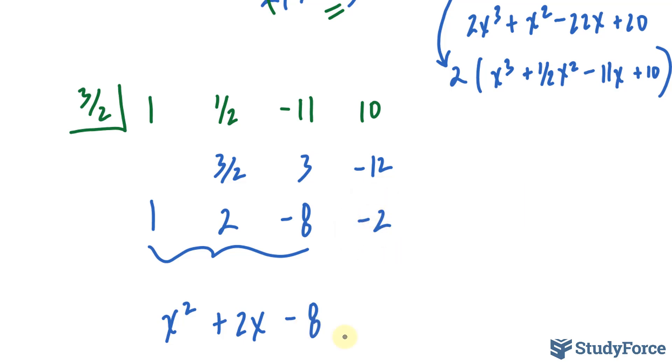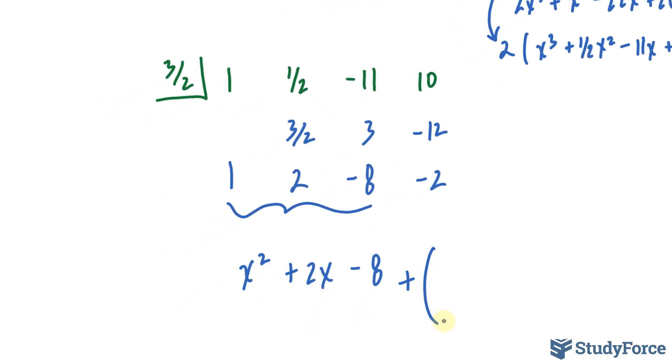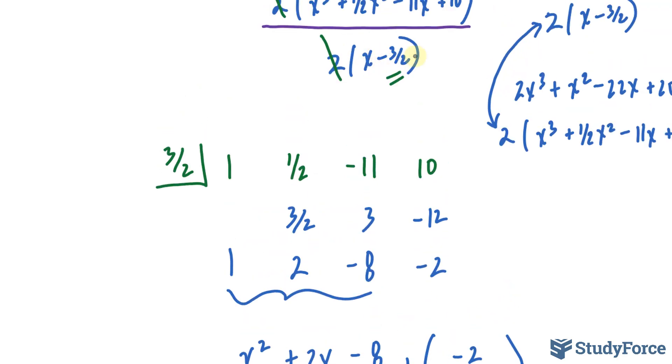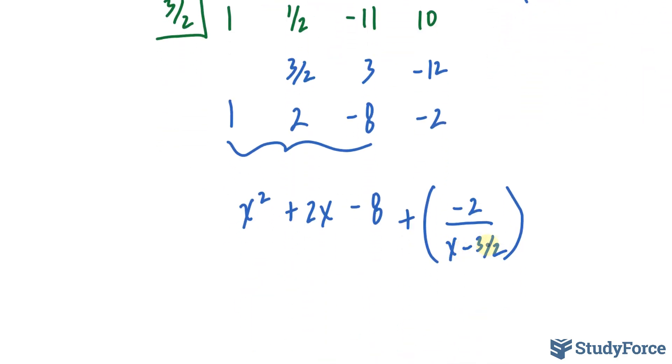With this thing, we will write down plus, and in parentheses, negative 2 over x minus 3/2. That exact same denominator before gets rewritten underneath here.